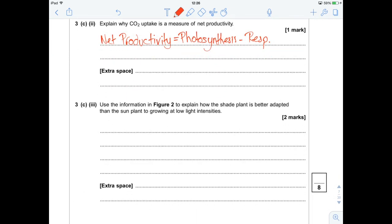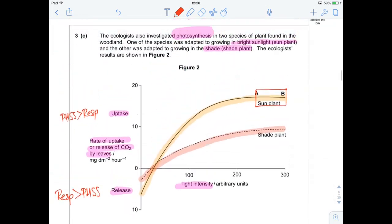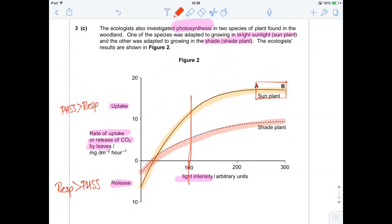Use the information in figure 3 to explain how the shade plant is better adapted than the sun plant to growing, that's the key bit for the second mark, at low light intensities. Now, it really does depend on what you class as a low light intensity here. I'm going to class everything before 100 as low light intensity. And if we look, if we shift that line and we look further this away, we see that at really ridiculously low light intensity, as we drop below, say, 20 to 30 units of light...